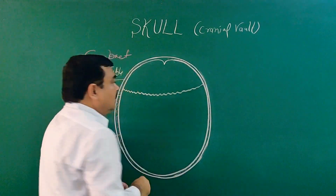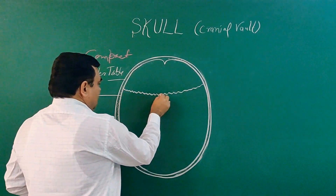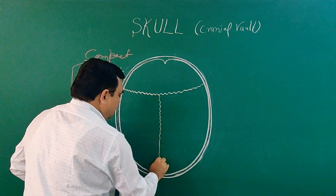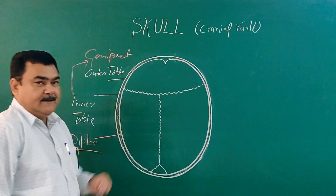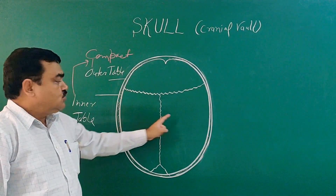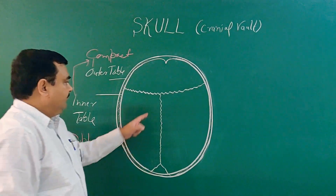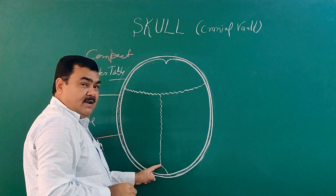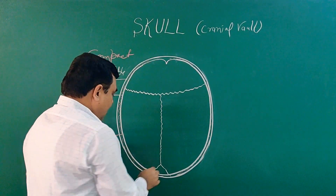Here is the coronal suture, here lies the sagittal suture, and here the lambdoid suture. This is the frontal bone, these two are the parietal bones, and here is the occipital bone. The middle point is bregma, and here is lambda.